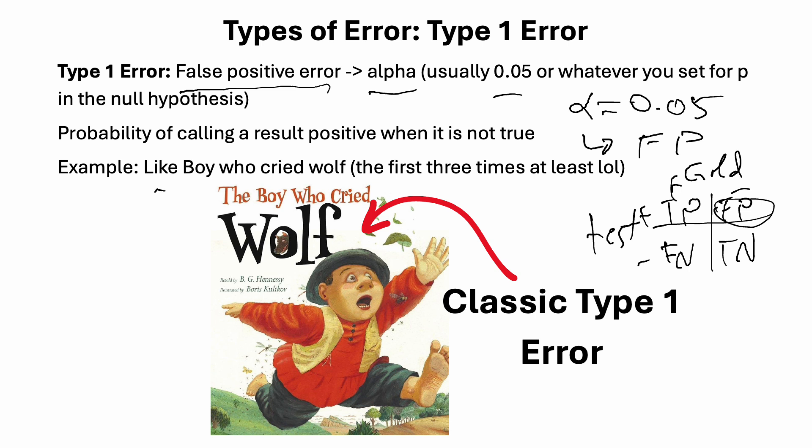The way I like to remember type 1 error is the boy who cried wolf. Remember the boy who said the wolves are coming, and all the villagers came and rushed, but they didn't see any wolves. That's a classic example of type 1 error — you call a result positive, saying there are wolves coming, but there actually were none.